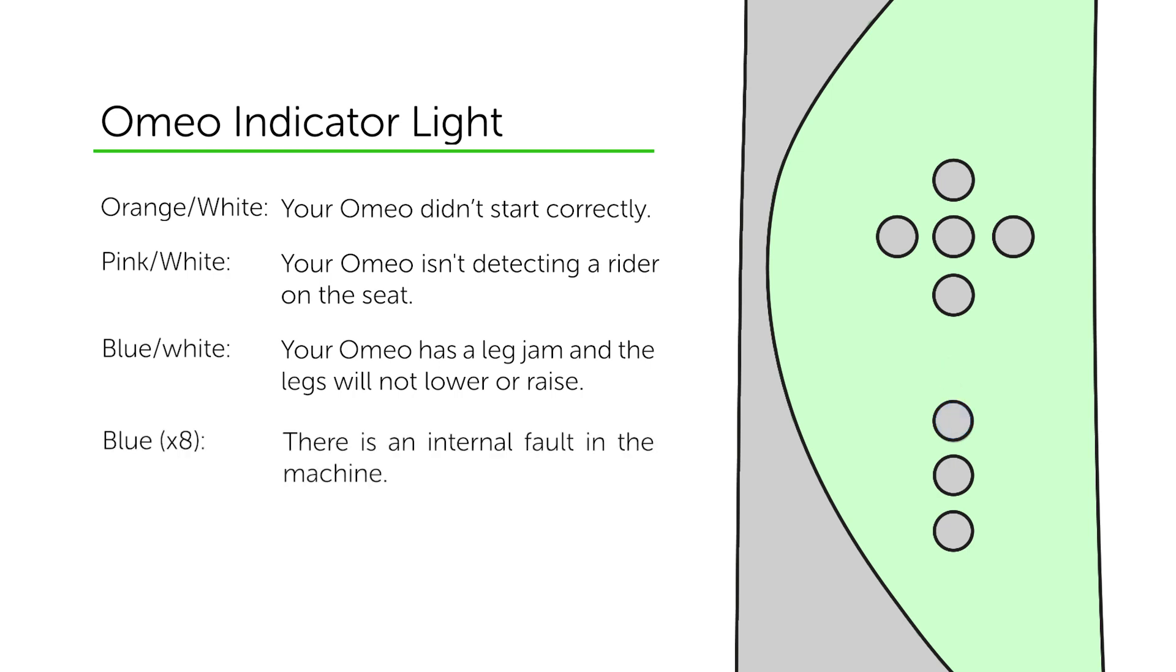If your light is flashing blue in a sequence of 8, this is due to an internal fault in the machine. The long flash in the sequence is the fault number. You should power down your machine and follow the troubleshooting guide found in your Omeo manual. You should also get in contact with your Omeo agent.